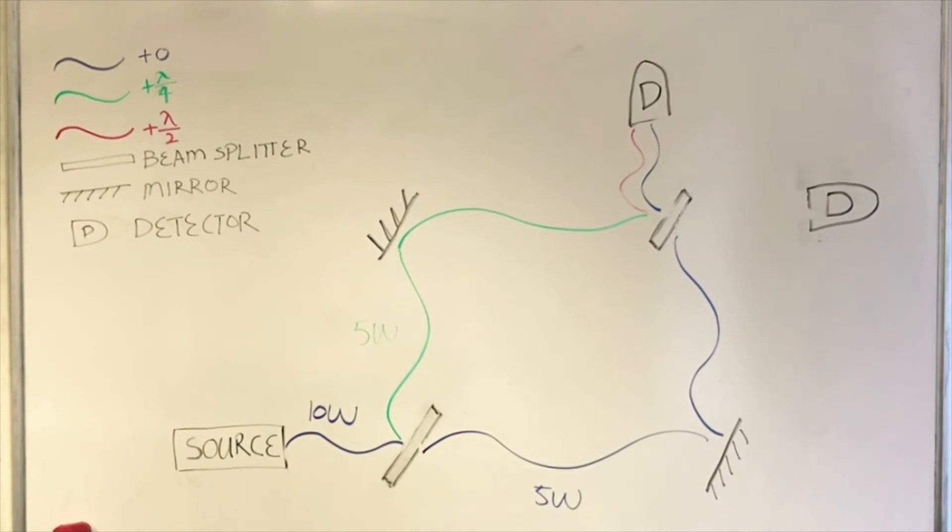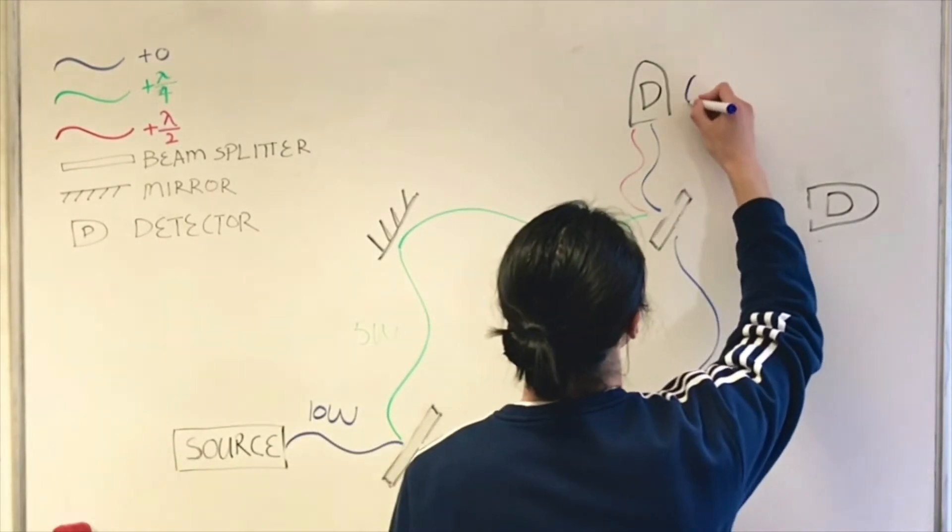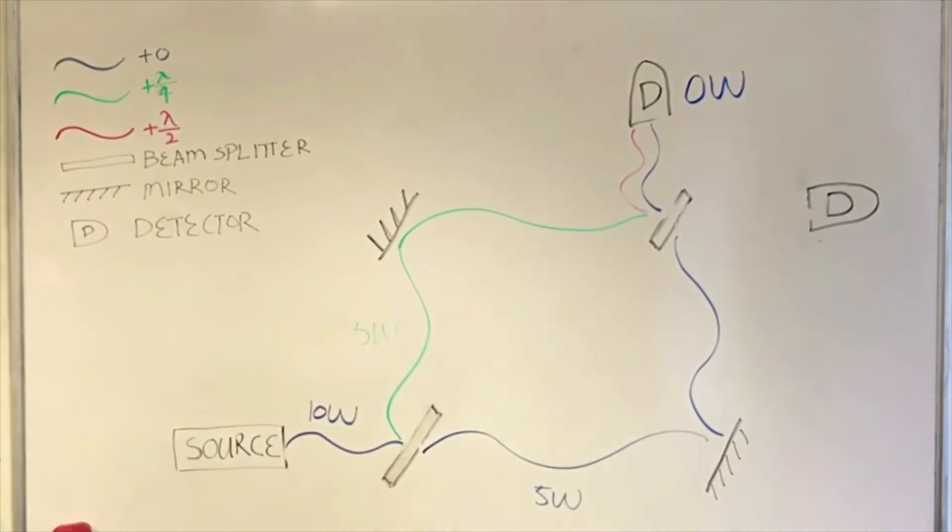Past the beam splitter, the two waves will arrive at the top detector. One blue and one red. From wave interference, we know that when there is a phase difference of half wavelength between two waves, they will interfere destructively causing no resultant wave reaching the top detector.